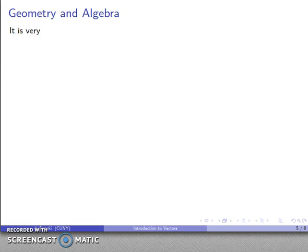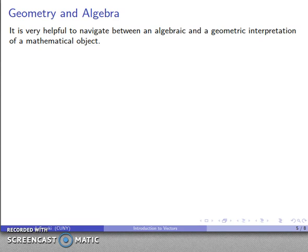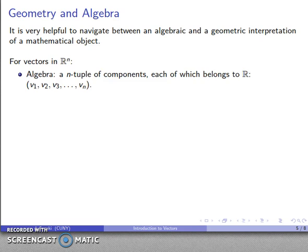Here's a useful idea: the interconnection between geometry and algebra. It is extremely helpful to be able to navigate between algebraic and geometric interpretation of a mathematical object. For vectors in R^n, on the one hand we could look at them algebraically—a vector is an n-tuple of components, each of which belongs to the set of real numbers.